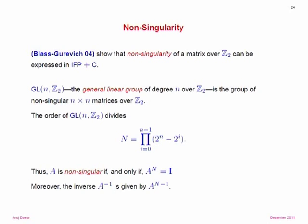In fact, you can also compute the inverse, because obviously if A to the N is the identity, then A to the N minus 1 is the inverse of A. So you can compute the inverse of a matrix.